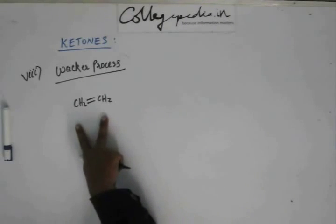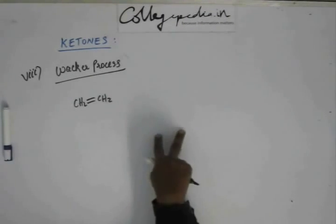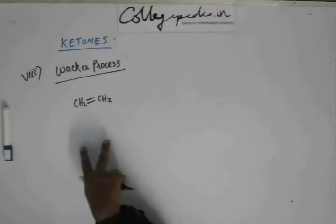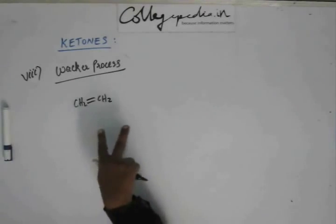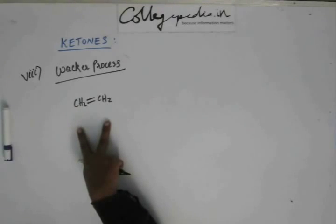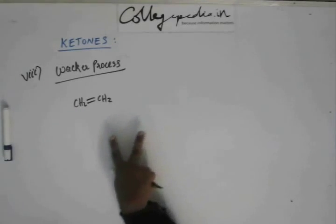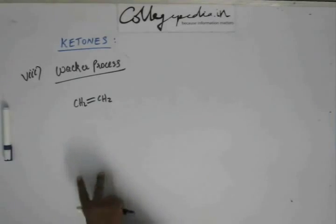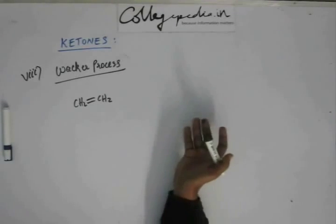I am taking ethene. If I am taking ethene, it will result in aldehyde. If I take any other higher alkene, that will result in ketone. So ethene will result in aldehyde, but basically all other alkenes will result in ketone. So that becomes the method of preparation of ketone.